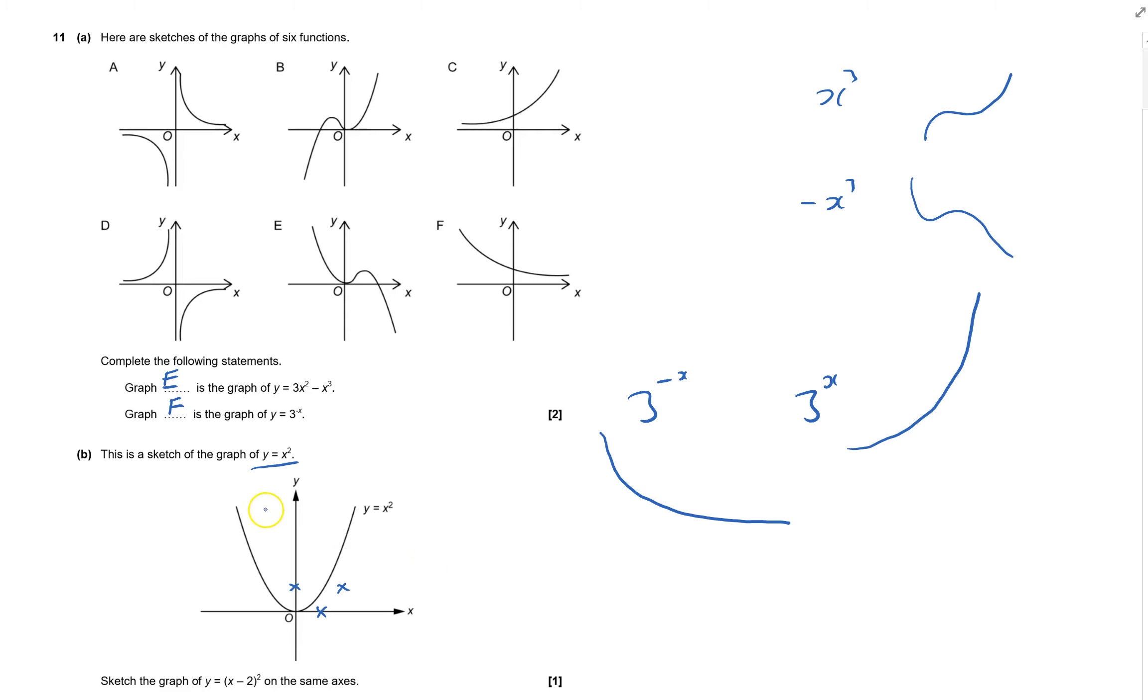So it's still going to be the same shape, but it's obviously moved, as you can see, two or two places to the right like so. So ideally you know exactly it's gone two places to the right, but if not, then you can just actually think, okay, I'll plot through points, see what happens. And that's question 11 done.